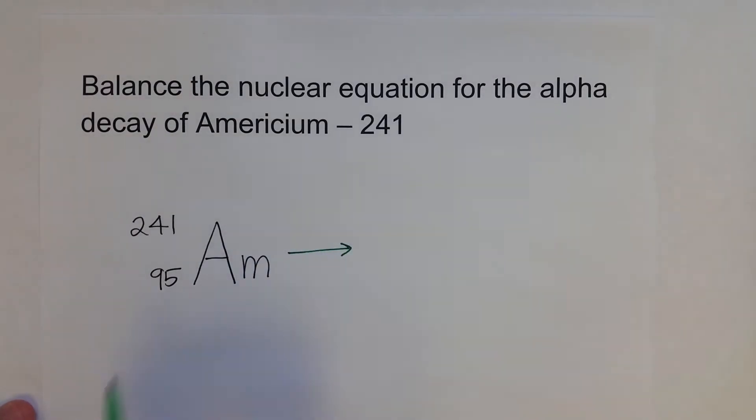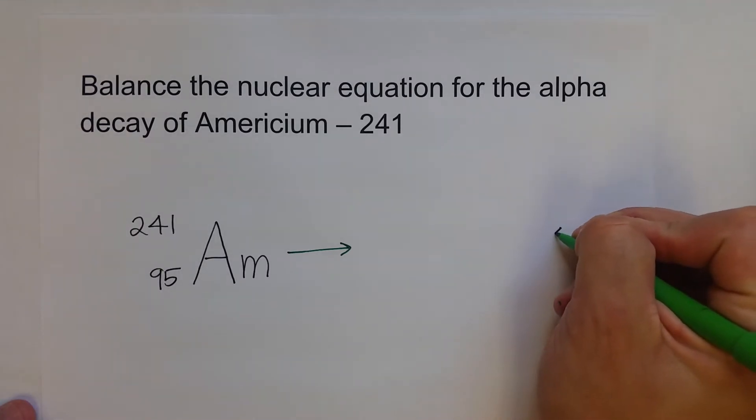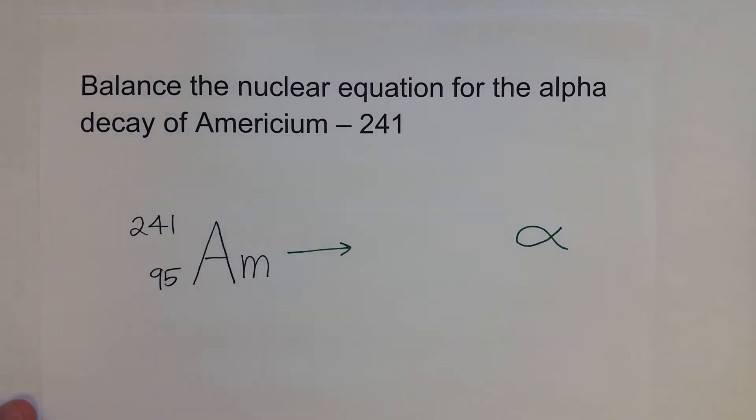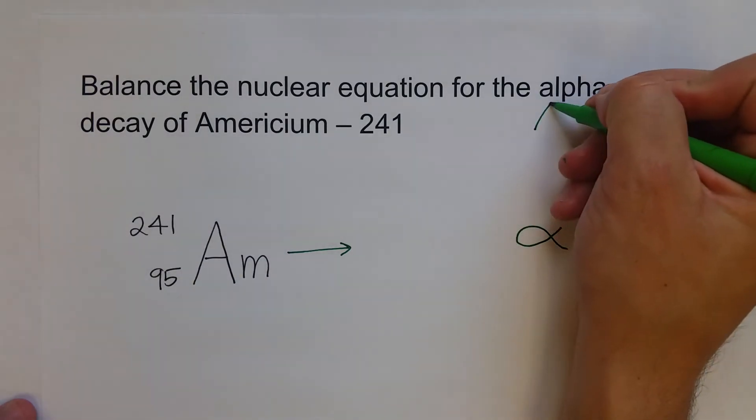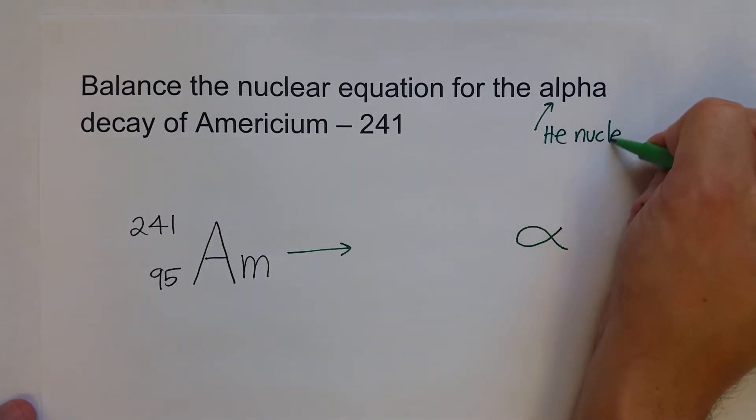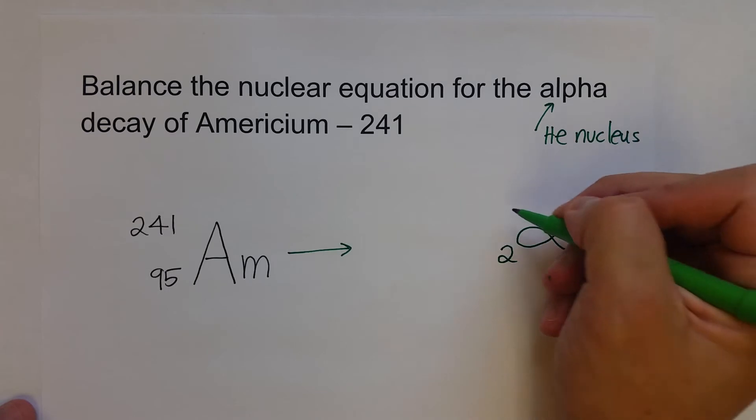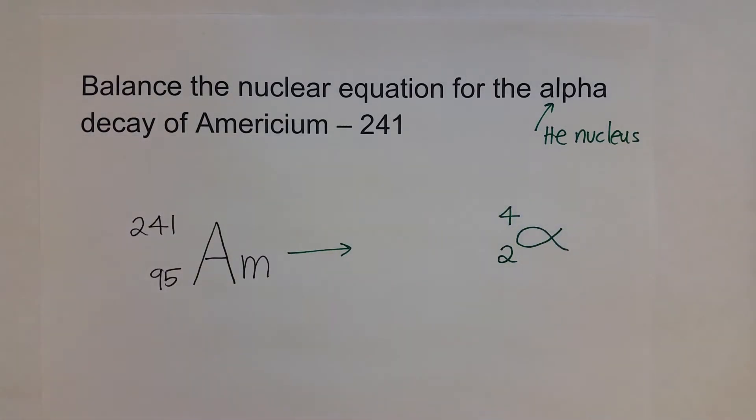It decays and produces an alpha particle. We're going to use the Greek letter alpha for its symbol. Since the alpha particle is essentially a helium nucleus, we remember that we can write the atomic symbol as having two protons, just like helium, and two neutrons for a mass number of 4.